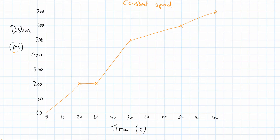If we had a curve, that indicates the speed is changing — what we call acceleration, which we'll come to later. The gradient of the straight line tells you how fast you're going — it actually gives you the speed — because speed equals distance over time.